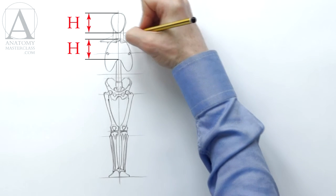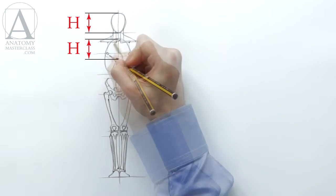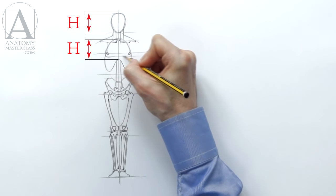The distance between the upper edge of the ribcage and the lower end of the breast bone is equal to the height of the head.